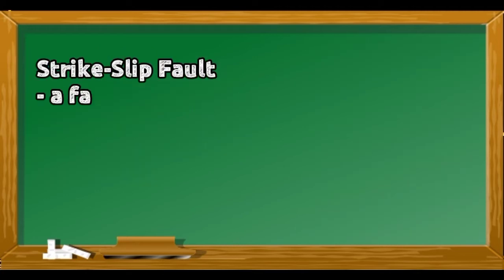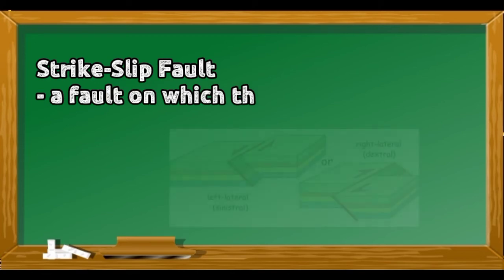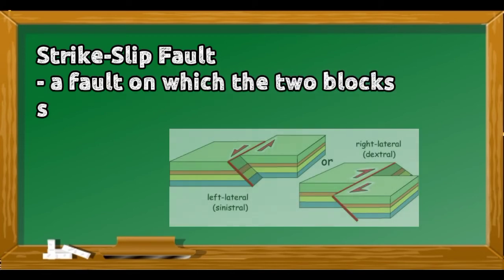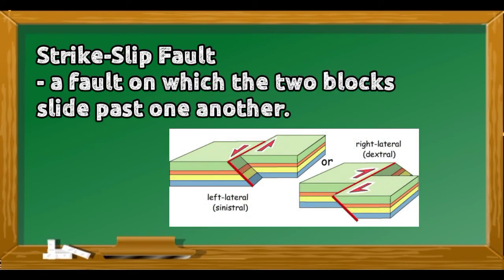Strike-Slip Fault: a fault on which the two blocks slide past one another. We have the left lateral, also known as the sinistral, and the right lateral, also known as the dextral.